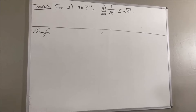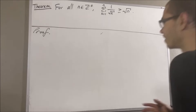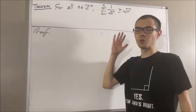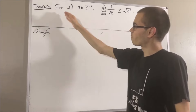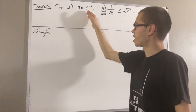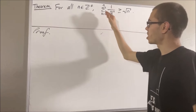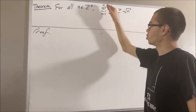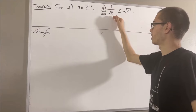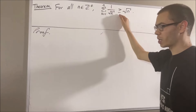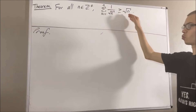Hello! In this video, we are going to prove the following theorem: for all positive integers n, the sum from k equals 1 to n of 1 over the square root of k is greater than or equal to the square root of n.